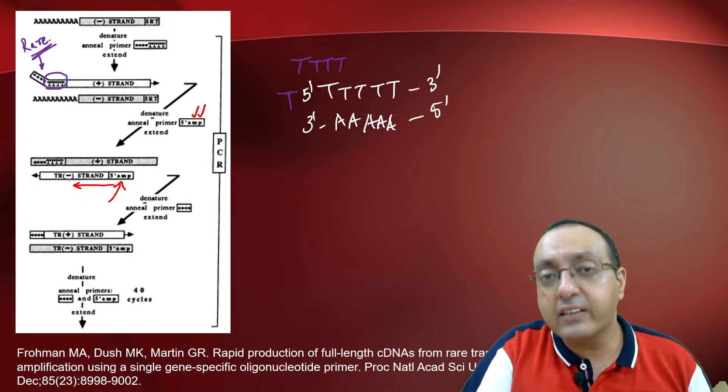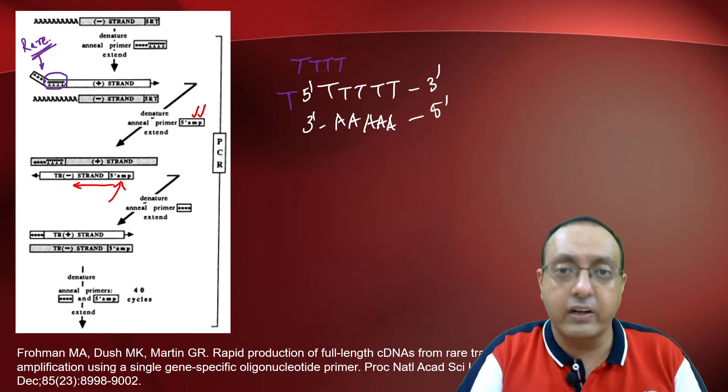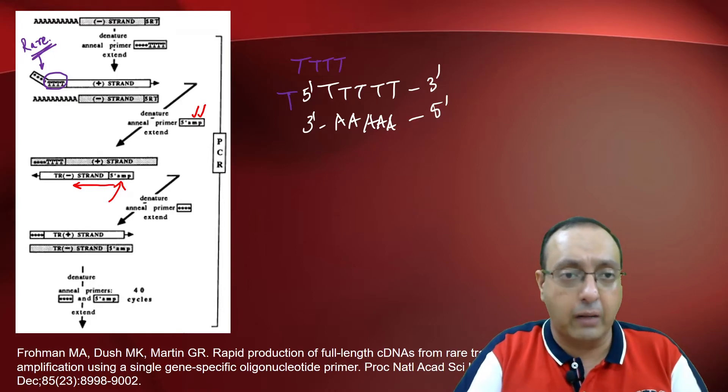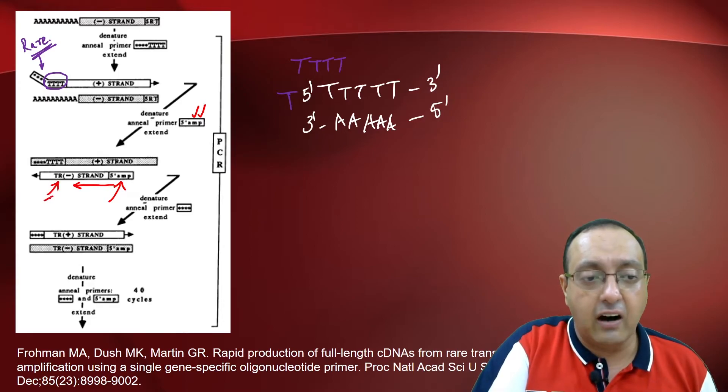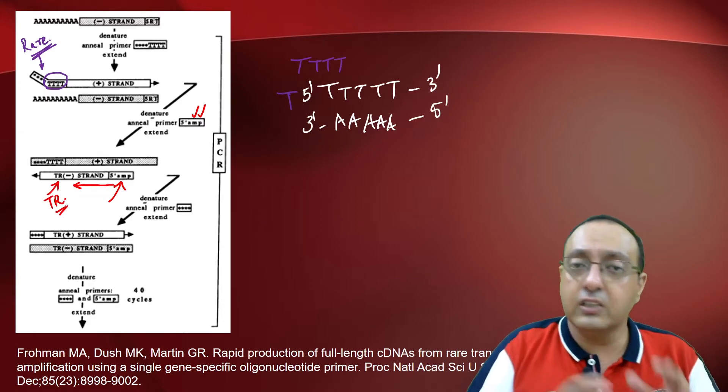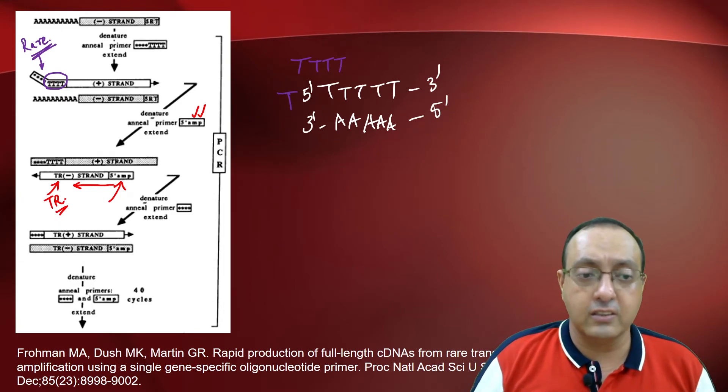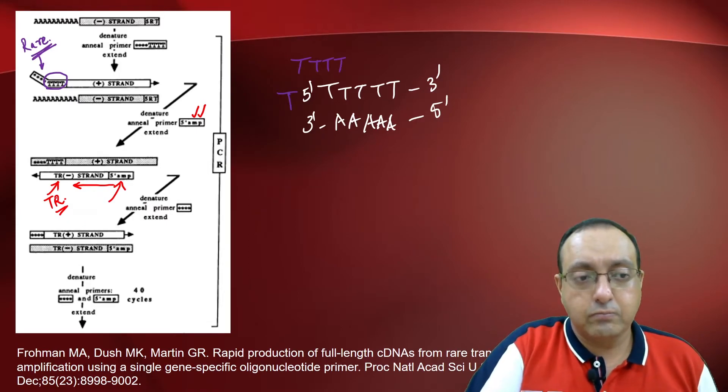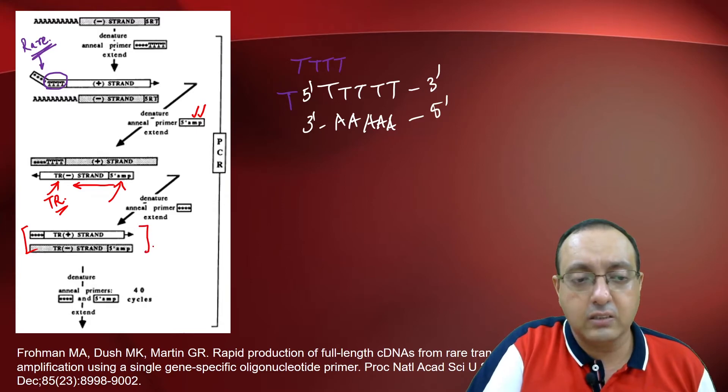And this will lead to a truncated negative strand because this will not amplify the full mRNA. You are already designing the primer in such a way because it is already pretty close to the 5' end. So it will be a truncated form. That's why it is labeled as TR. So this will be a shorter version of the cDNA or the mRNA that you are interested in studying.